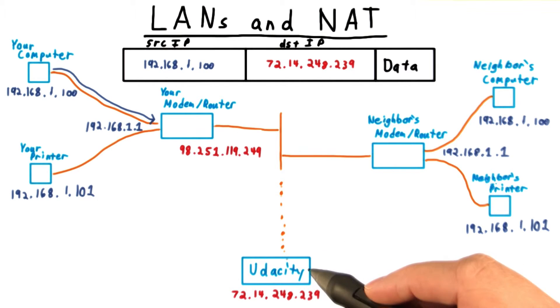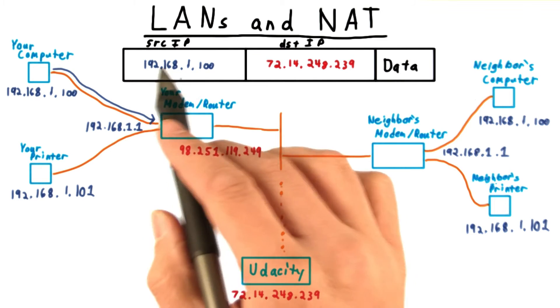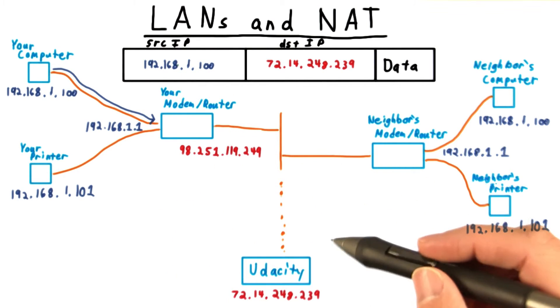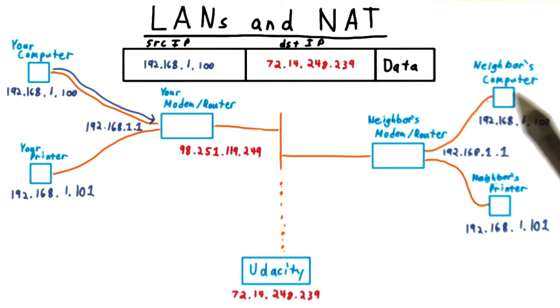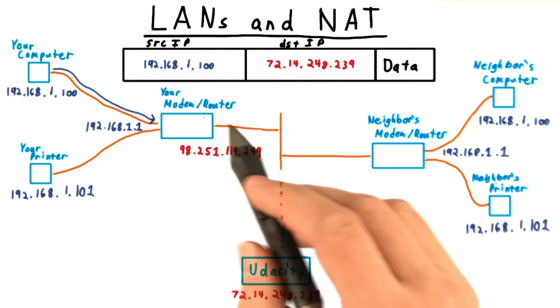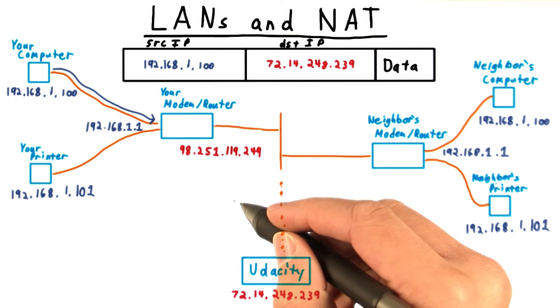Eventually, the packet will reach the Udacity site. But it's not clear how Udacity should send the information back. It can't use the local IP address because there's no way to tell whether it should send the information back to your computer or to your neighbors.